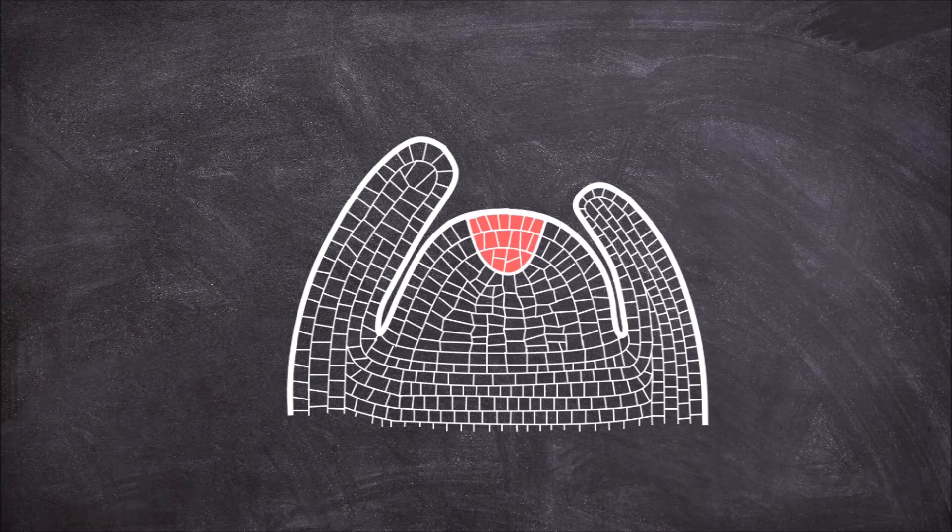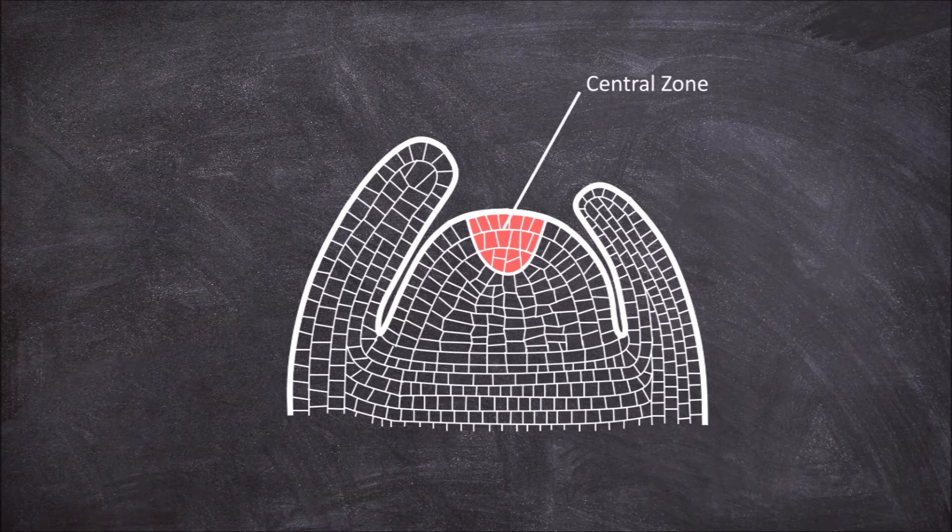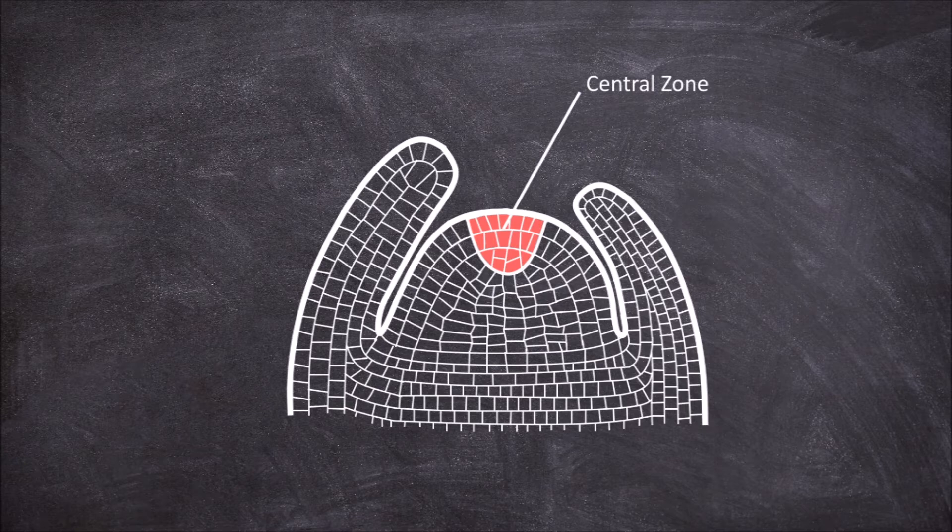The central zone as the name suggests is found in the center of the meristem and consists of a small number of large highly vacuolated cells. These cells are stem cells, some have no roles and others undergo division to act as replenishments for the peripheral and rib zones.